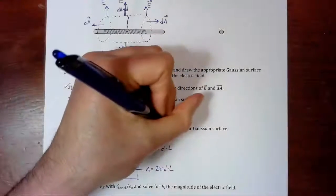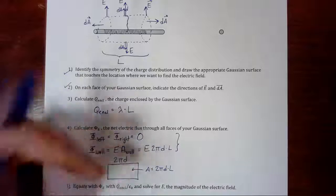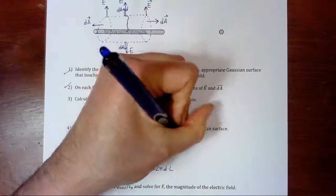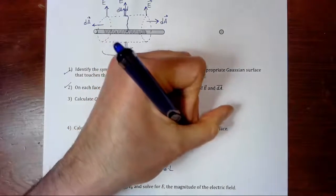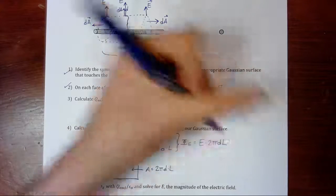So that means that our flux through the wall is E times 2π times D times L. And therefore our net flux, adding together the left cylinder, the right cylinder, and the wall, we get E times 2πDL.